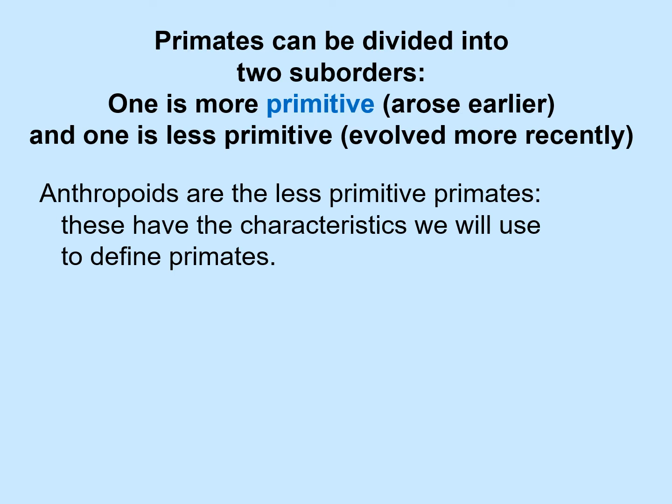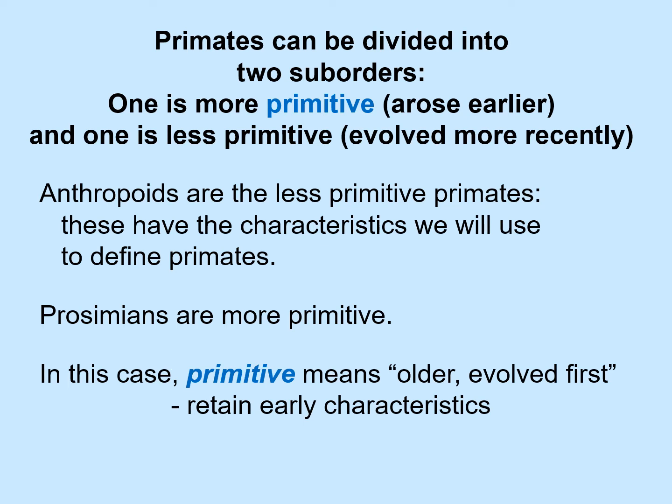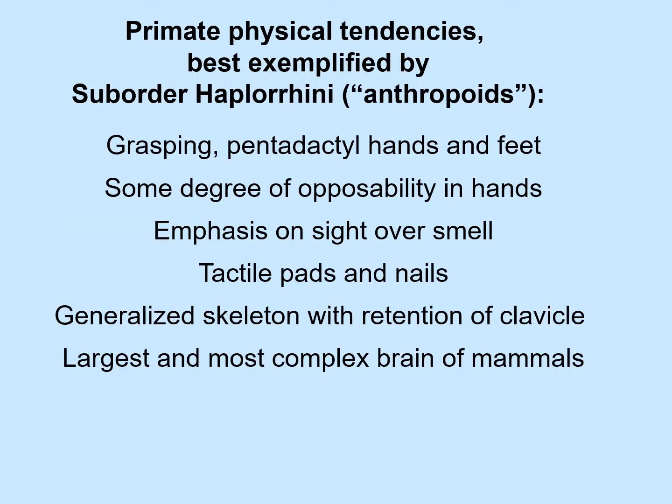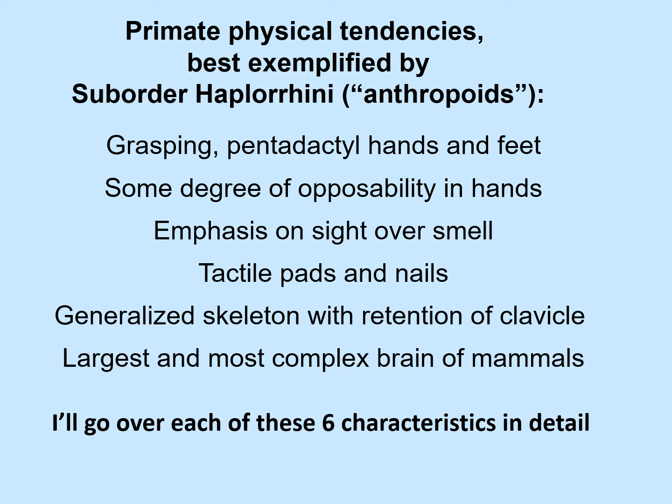Anthropoids are the less primitive primates — we are a type of anthropoid — and anthropoids have the characteristics we use to define primates. Versus prosimians, which are more primitive and evolved earlier; in this case, primitive means older, evolved first, and retaining early characteristics. Primate physical characteristics are best exemplified by anthropoids. There are six: grasping pentadactyl hands and feet; some degree of opposability in hands; emphasis on sight over smell; tactile pads and nails; generalized skeleton with retention of the clavicle; and the largest and most complex brain of mammals.